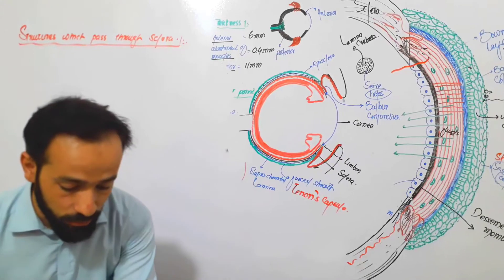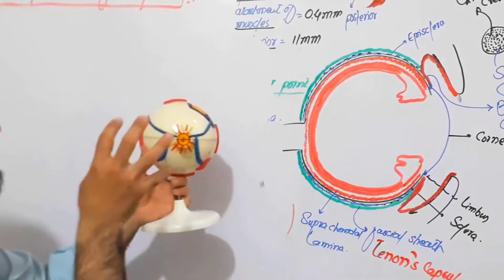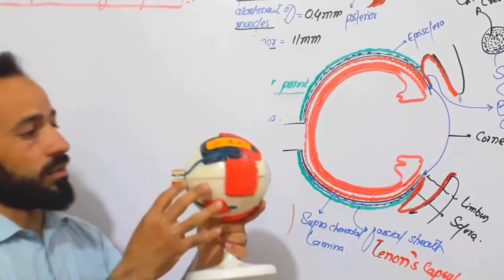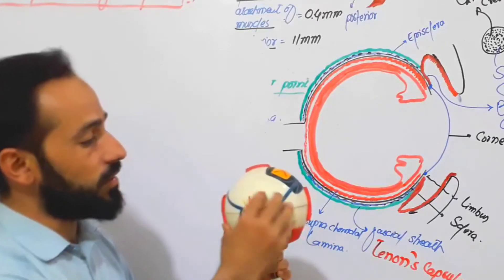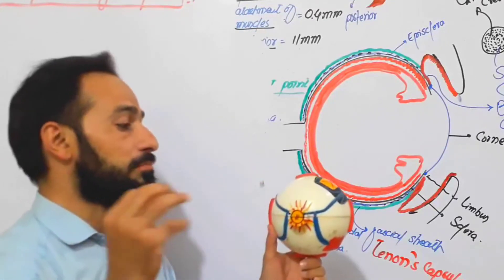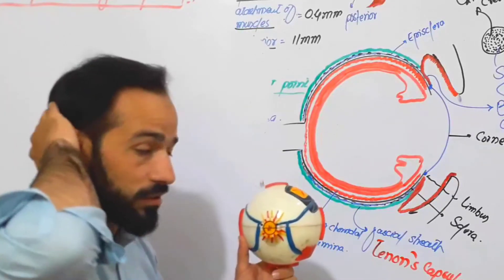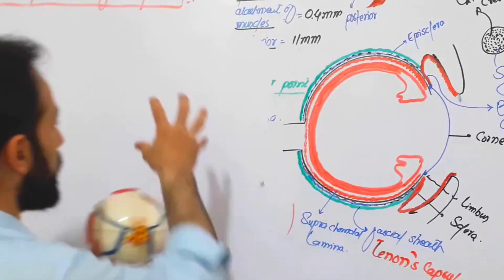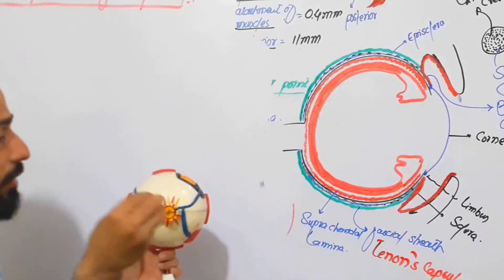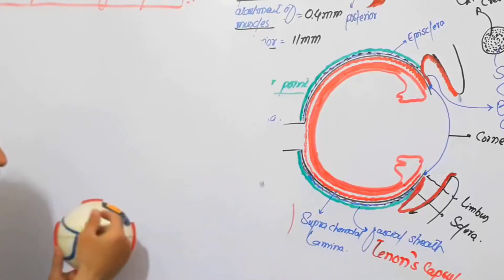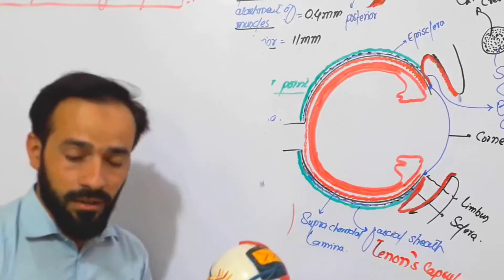In order to understand the structures which pass through the sclera, we should look at a diagram of the eye from the posterior aspect. This is the lateral aspect, this is the anterior aspect, and this is the posterior aspect. Many things pass through the sclera from the posterior side, so we will make a diagram showing the posterior aspect of the sclera and mark all the important arteries and nerves which pass through it.